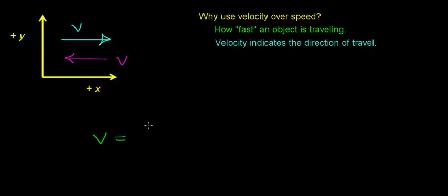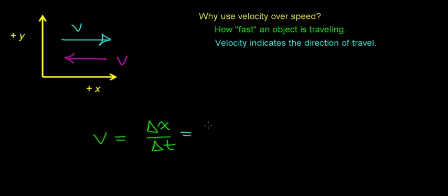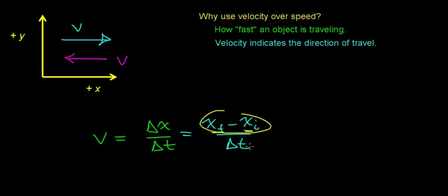Velocity is defined as the change in the object's position divided by the time it takes for the object to change its position. This quantity — the change in position — is called the displacement of the object; it has both direction and magnitude. For motion in the x direction, this is the final position minus the starting position divided by the elapsed time, and this value can be greater than or less than zero.